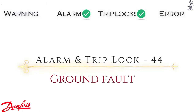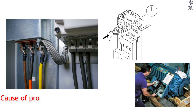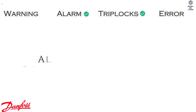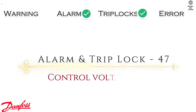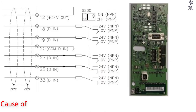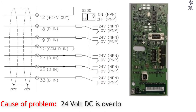Alarm and Trip Lock 44: Ground Fault. Cause of Problem — discharge from output phases to ground. Alarm and Trip Lock 47: Control Voltage Fault. Cause of Problem — 24 volt DC is overloaded.